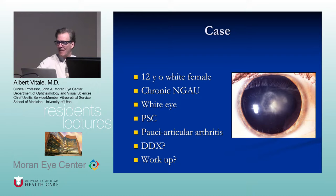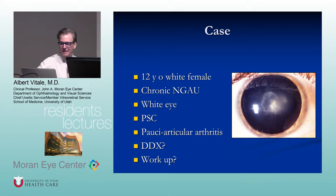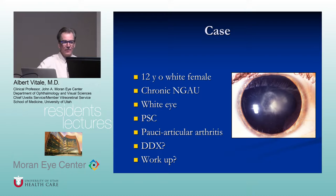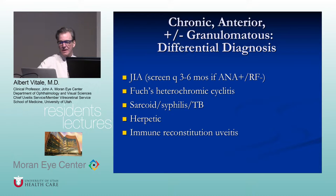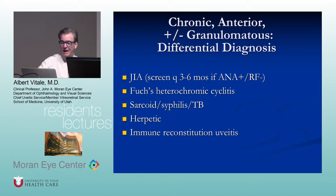In contrast, a 12-year-old girl with non-granulomatous anterior uveitis, chronic white eye, posterior subcapsular cataract, and oligoarticular arthritis: think JIA — or chronic iridocyclitis in kids, which can look exactly like JIA. Adults with Fuchs will frequently have low-grade cells, no posterior subcapsular cataract initially, high pressure, and cataract. Always think about syphilis, sarcoid, TB, herpes, and immune recovery uveitis.